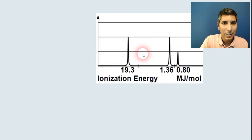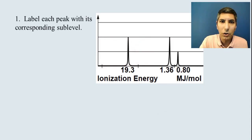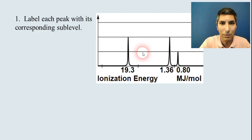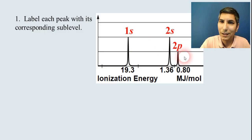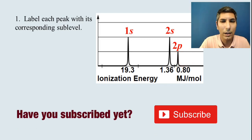Let's try another one. Let's look at this photoelectron spectroscopy graph and label each peak with its corresponding sub-level. This works just like an electron configuration — it goes 1s, then 2s, then 2p. Just label from left to right, just like it were an electron configuration. If you can write an electron configuration, you can do these.